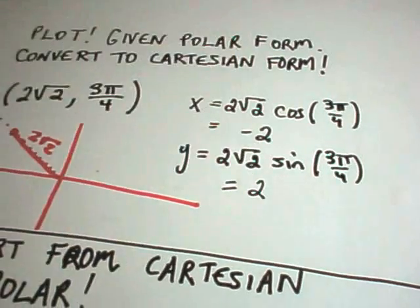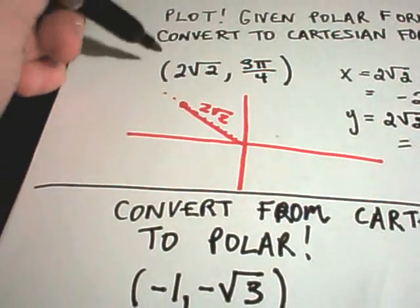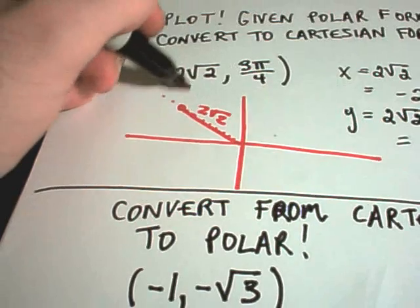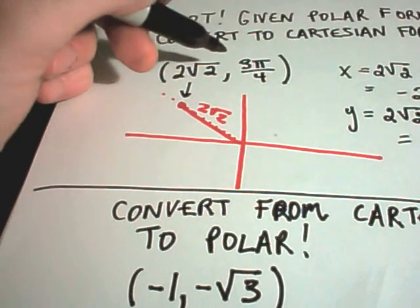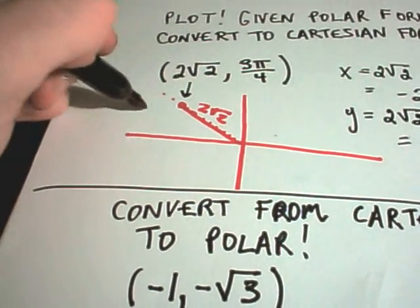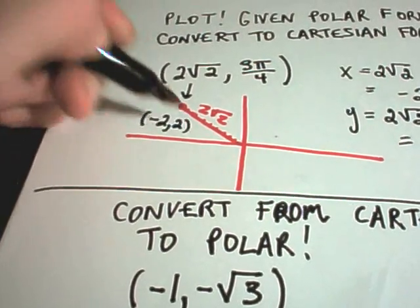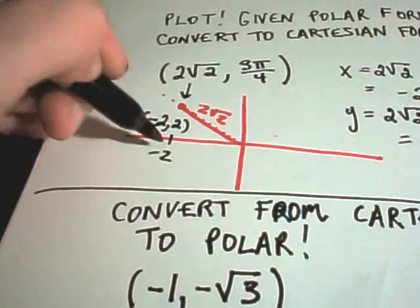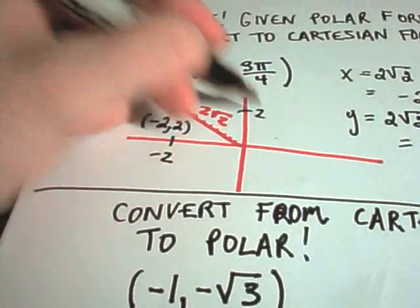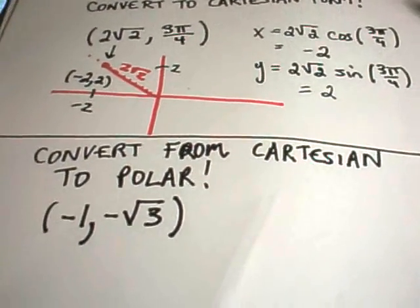And then y is going to be 2 square root of 2, times sine of the angle, 3 pi over 4. And if you simplify this down, you simply get positive 2. So it says in polar form, this point is the point 2 square root of 2, 3 pi over 4. In x and y coordinates, we can describe it as the point negative 2, 2, which seems reasonable. Negative 2 over and positive 2 up. Okay, so not so bad.